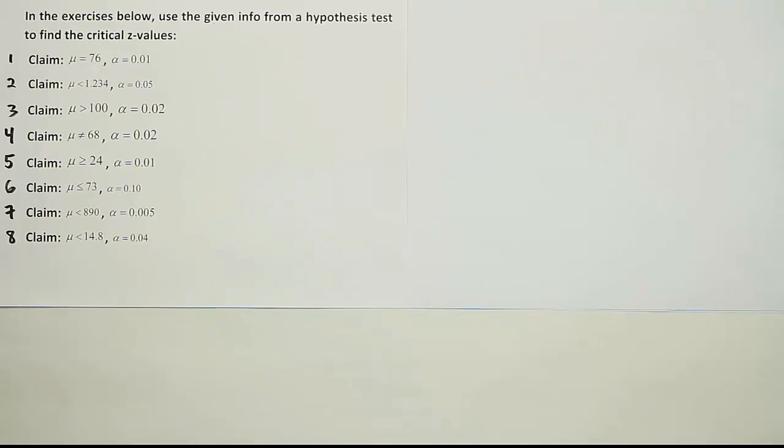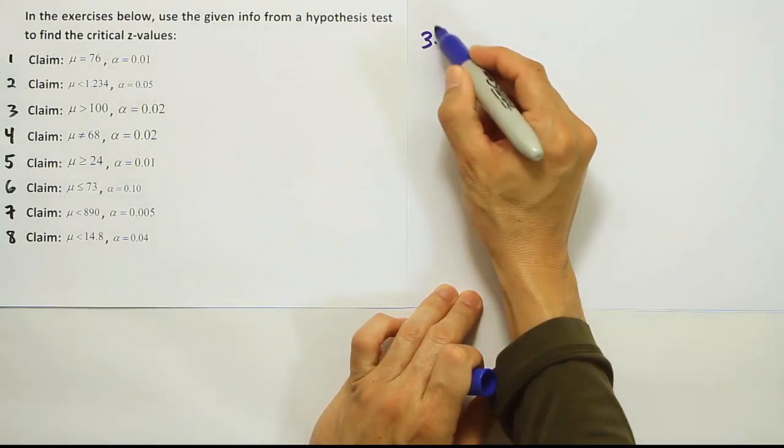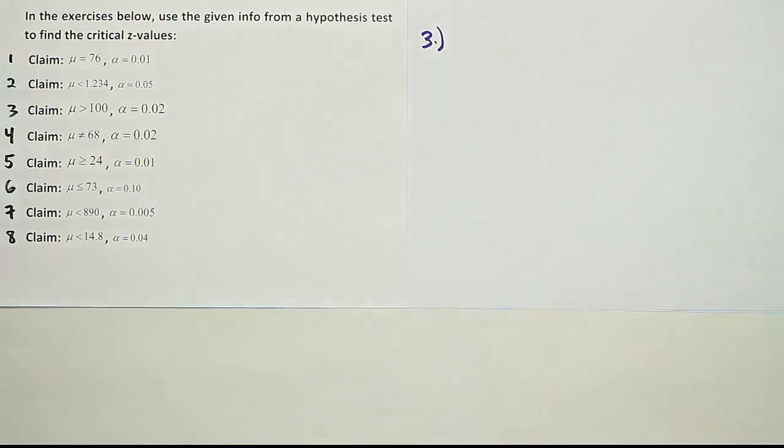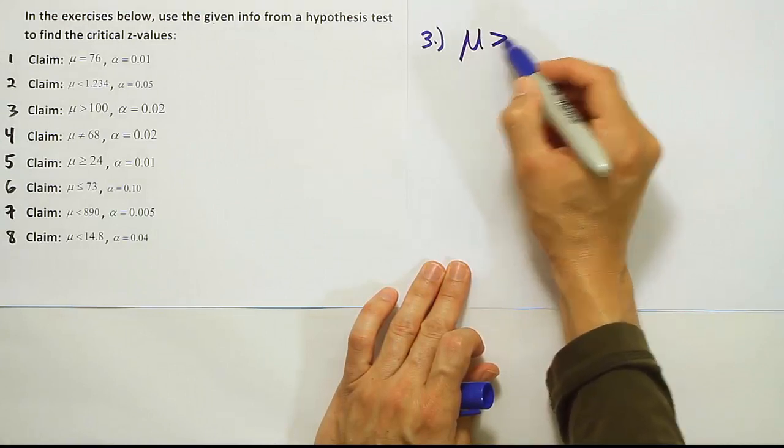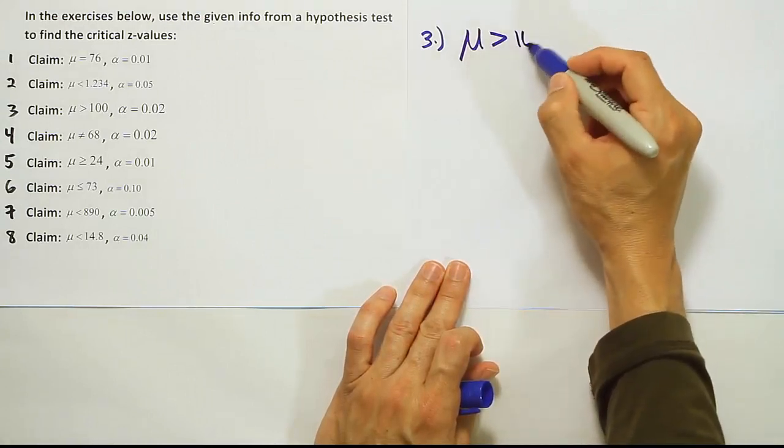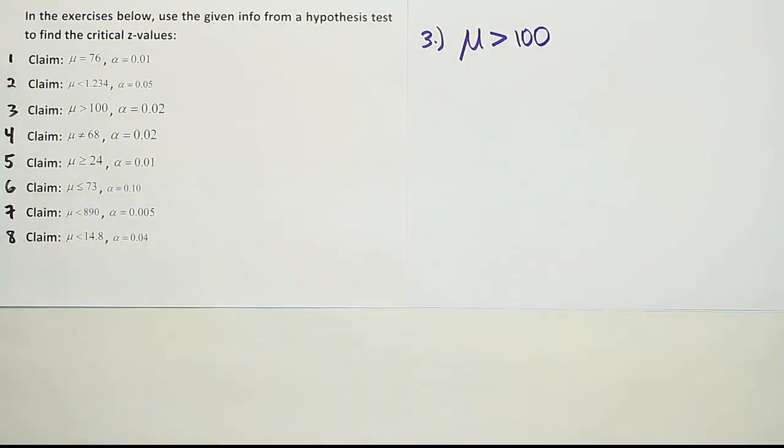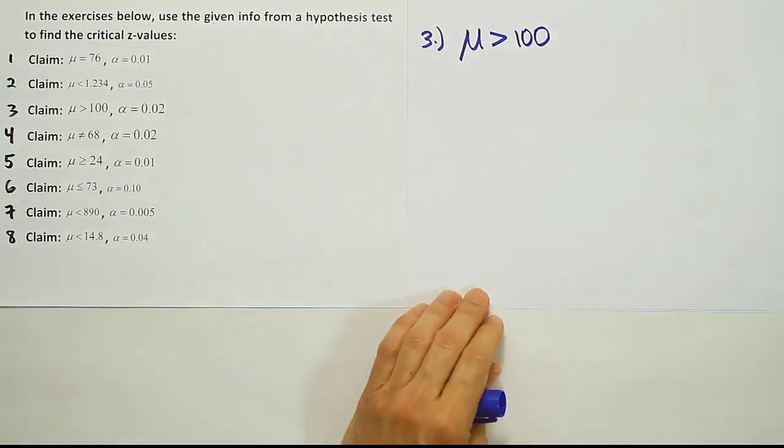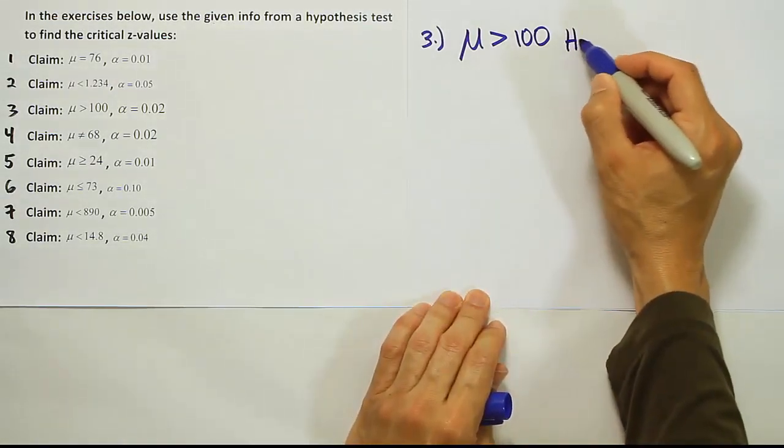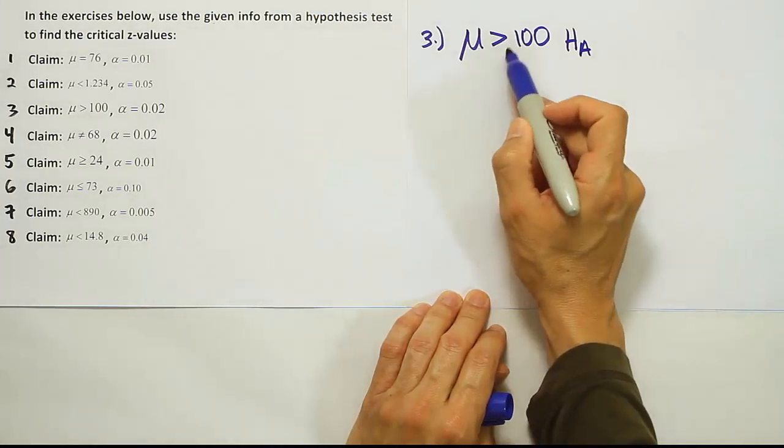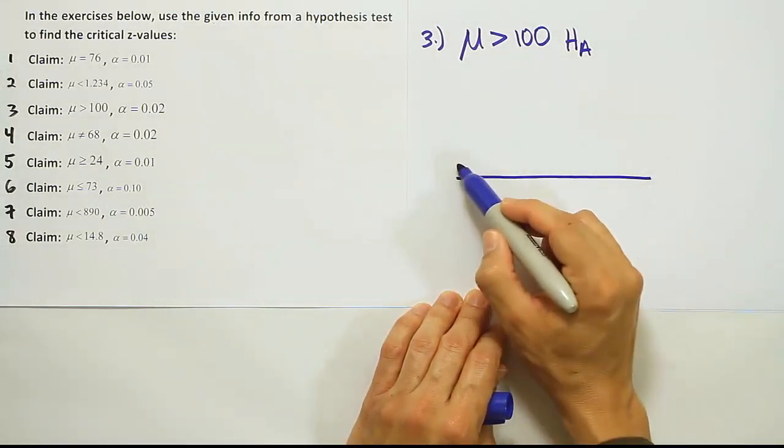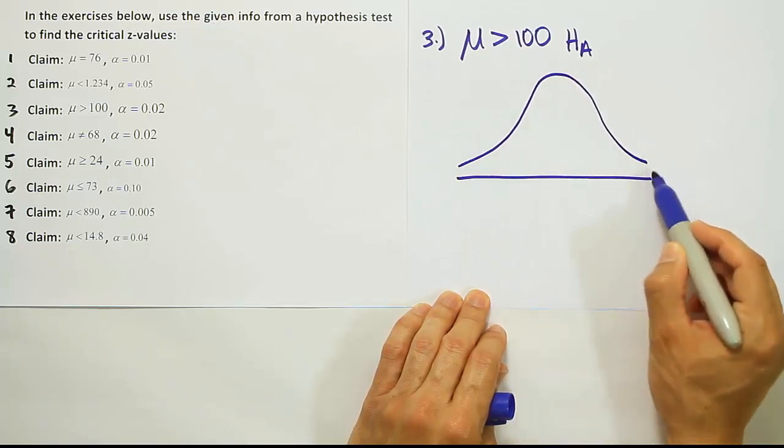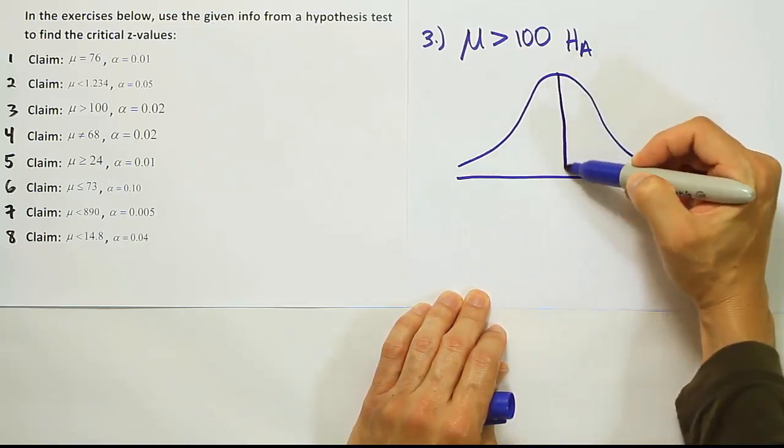Okay, so now we're looking at problem number three here on the list of problems and they tell us that the claim is that the mean is greater than 100. When you see that, you know that the alternative hypothesis is also that the mean is greater than 100, because remember, greater than is one of the alternative hypothesis symbols.